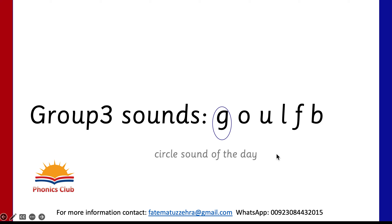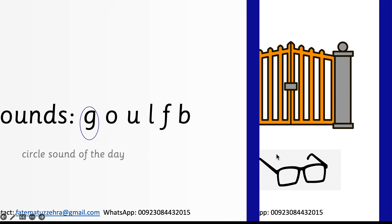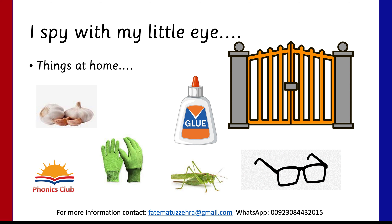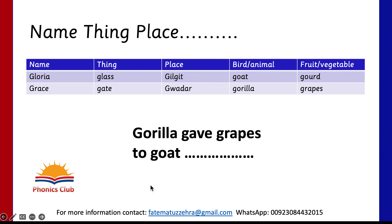Group 3 sounds — circle the sound of the day. 'I spy with my little eye' — children can play this game at home with adults to find things starting with the 'guh' sound. They can go and touch the object and identify its color too, like green grasshopper, green gloves. These games are important for kids' vocabulary development.